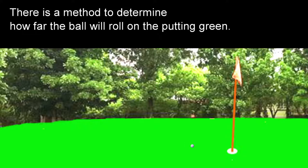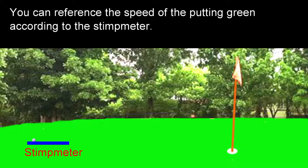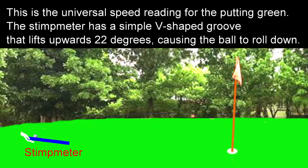There is a method to determine how far the ball will roll on the putting green. You can reference the speed of the putting green according to the stimpmeter. This is the universal speed reading for the putting green. The stimpmeter has a simple V-shaped groove that lifts upwards 22 degrees, causing the ball to roll down.